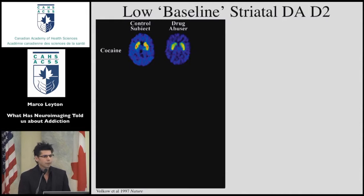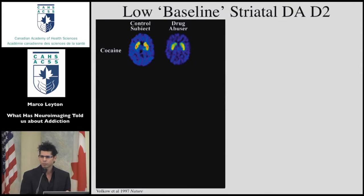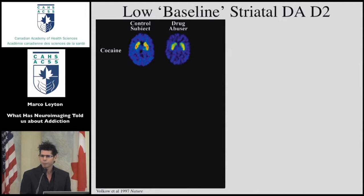A good place to start is with a very important finding by Nora Volkow — she's the director of NIDA in the US. This is one of her most famous papers, reported in the mid-to-late 90s, in which she used the PET-raclopride method, which provides an index of the availability of dopamine D2 receptors within the striatum. What she reported was that compared to healthy controls, individuals with a long history of severe cocaine dependence — near-daily users for a decade — showed a significant reduction in the availability of D2 receptors within the striatum.